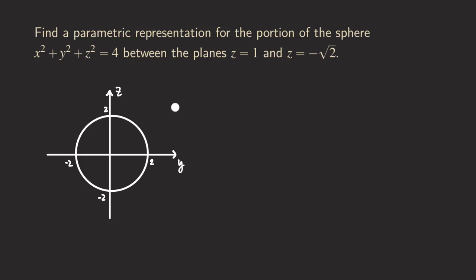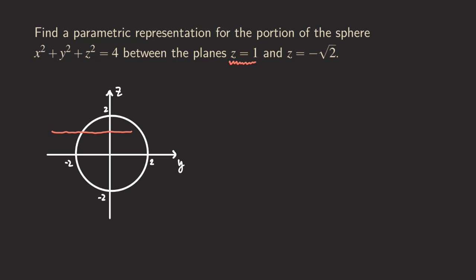Hello everyone, it's Wilson here. Today let's talk about finding the parameterization of the portion of the sphere that is between the plane z equals one and z equals negative square root of two. I have a view on the yz plane of the sphere. As you can see this is just two dimensions — the x-axis is pointing toward us. If I'm graphing z equals one, then that will actually just look like a line. So this is z equals one.